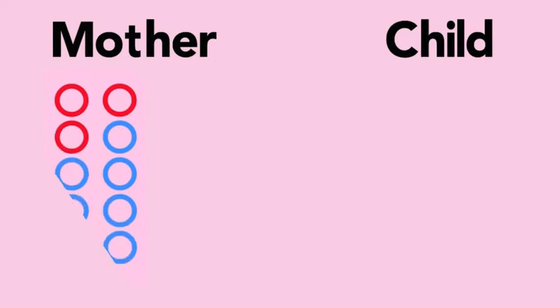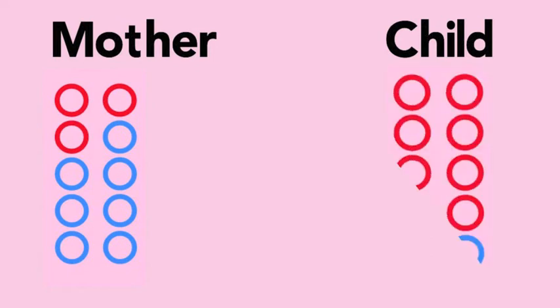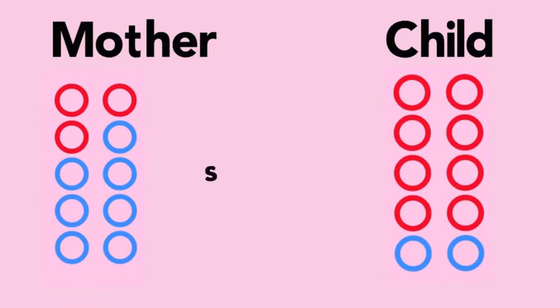The number of rings containing a pathogenic mutation can vary from mother to child. For instance, a mother can have 30% of her mtDNA affected by a mutation, while her child could have 80% of his mtDNA affected. This can account for cases where the severity of symptoms differ between family members.